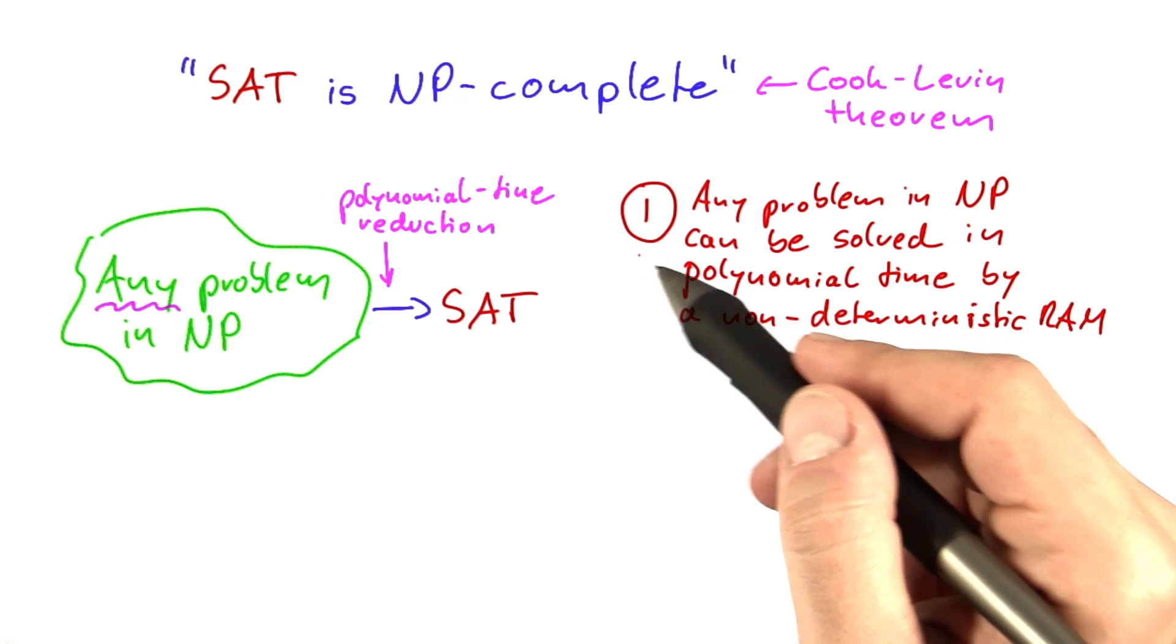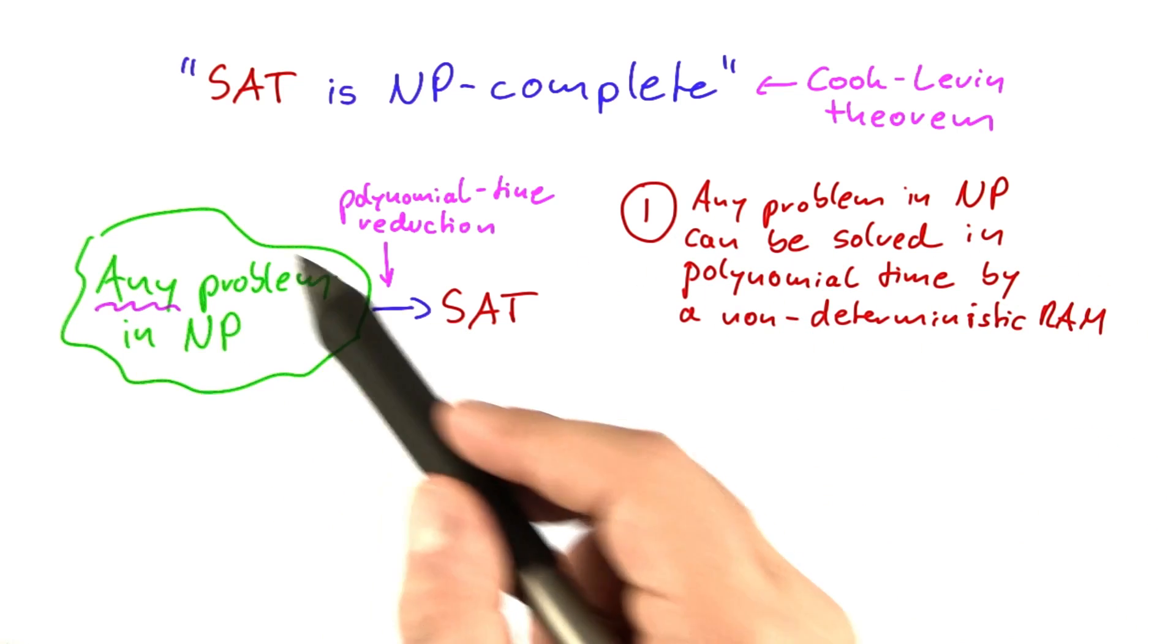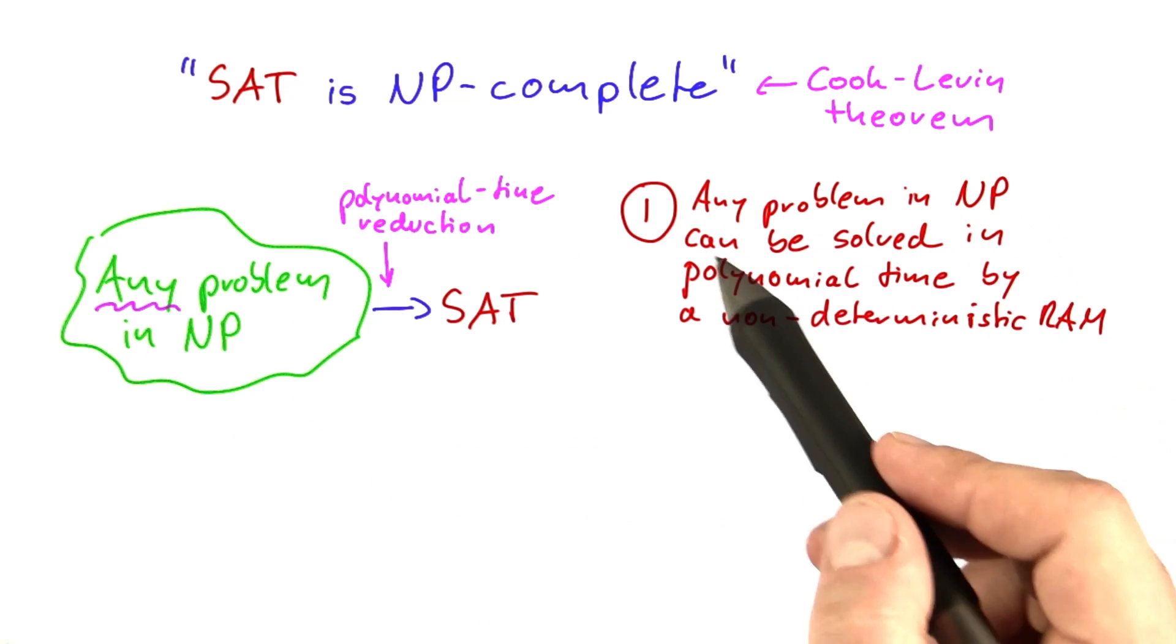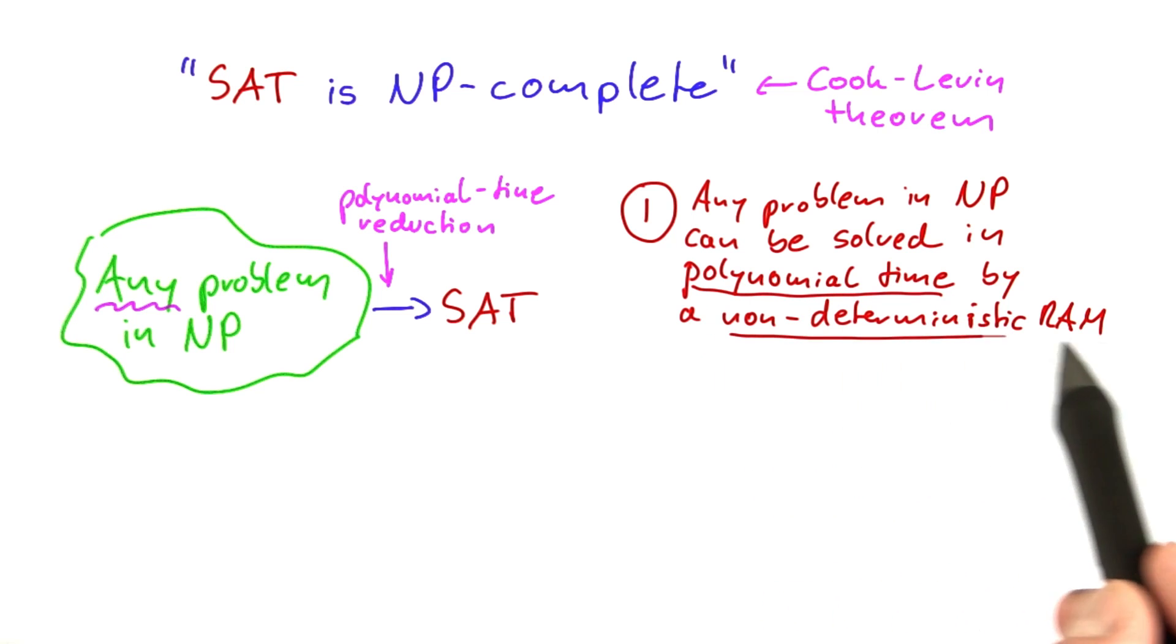So the first one is - well, it's not really an idea - it's the trivial definition of what it means that a problem lies in NP. If a problem lies in NP, that means it can be solved in polynomial time by a non-deterministic RAM.